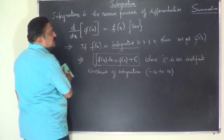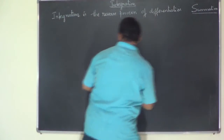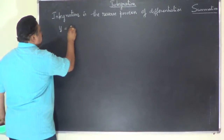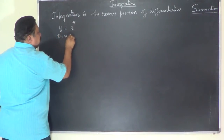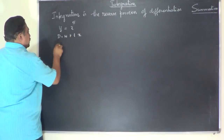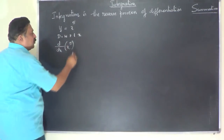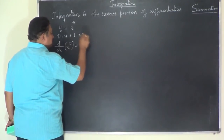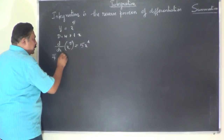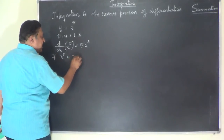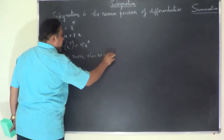To understand how we get c, let's take some examples. Consider y is equal to x to the power of 5. Differentiating with respect to x, using the power rule, the differential coefficient of x to the power of 5 is 5x to the power of 4. This means that if x⁵ is differentiated with respect to x, we get 5x⁴.